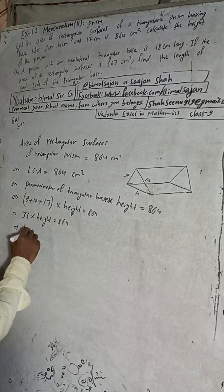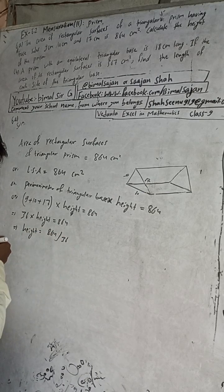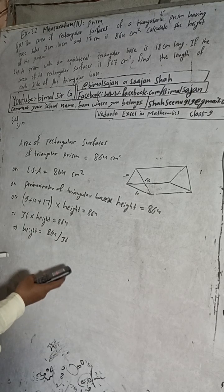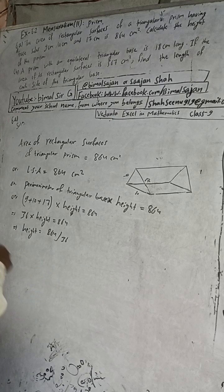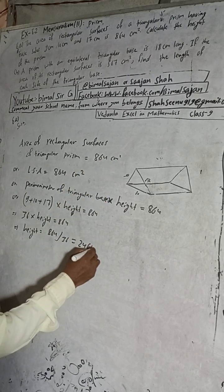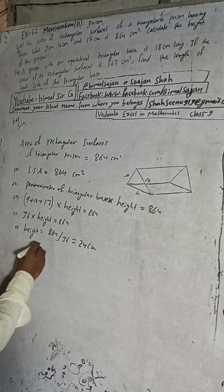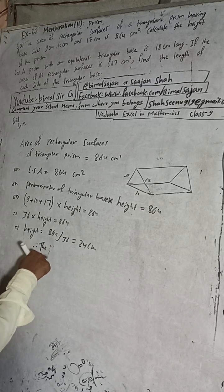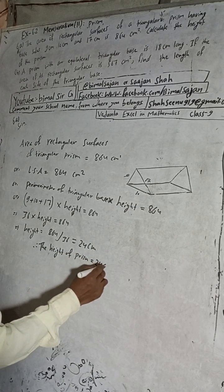This implies height equals 864 divided by 36, which gives 24 cm. Therefore, the height of the prism is equal to 24 cm.